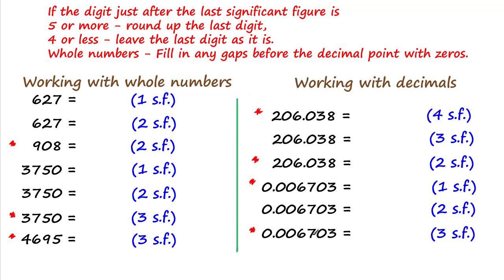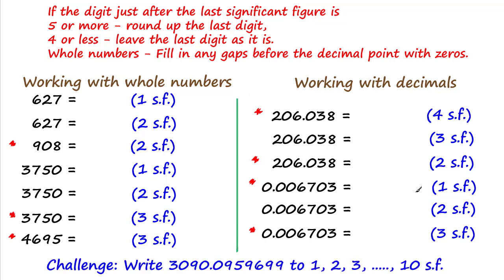At any point you might want to stop the video and try to answer some of these questions — please do that, then fast forward to check your answers. At the end, you might want to try the challenge question where you have to write a decimal to 1, 2, 3, 4, and so on up to 10 significant figures. You'll find the answers in the video linked in the top right-hand corner.